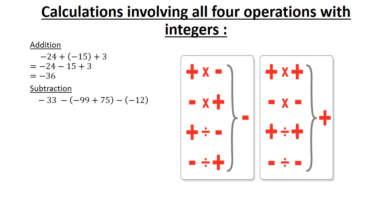Subtraction: negative 33 minus, in brackets, negative 99 plus 75 minus, in brackets, negative 12 equals. Then we simplify: negative 33 plus 99 minus 75 plus 12 equals 3.